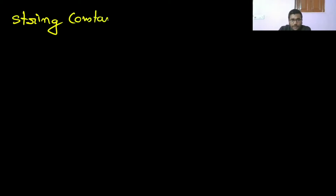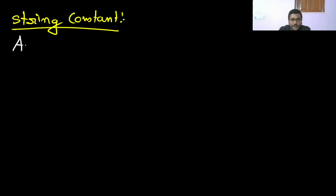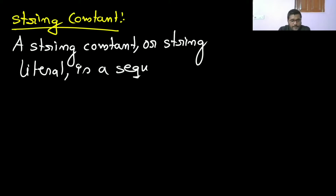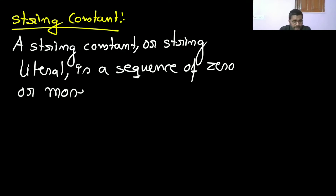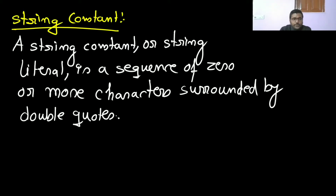Now let's look at string constants. A string constant — also called a string literal — is a sequence of zero or more characters surrounded by double quotes. For example, "I am a string" is a string constant written in double quotes.